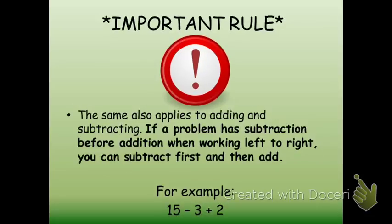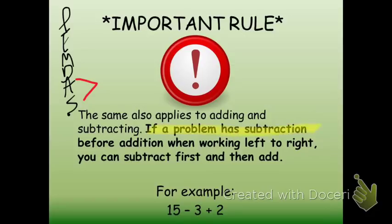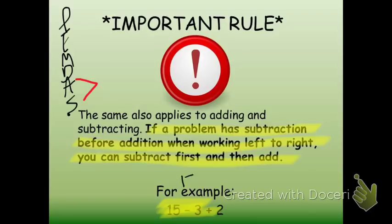The same holds true for addition and subtraction. In our memory tool, addition comes before subtraction, but they are also interchangeable. If a problem has subtraction before addition when working left to right, you can subtract first and then add. For example, you encounter 15 minus 3 first in your problem working left to right, so you would technically subtract first. 15 minus 3 gives you 12, and then plus 2, you get an answer of 14. Had you done it incorrectly — adding 3 plus 2 first to get 5, then subtracting from 15 — you'd get 10, which is incorrect.